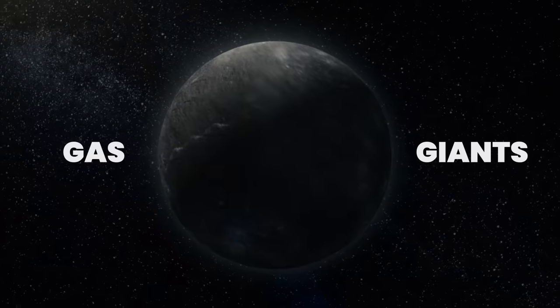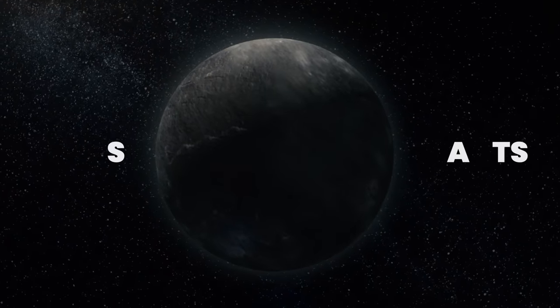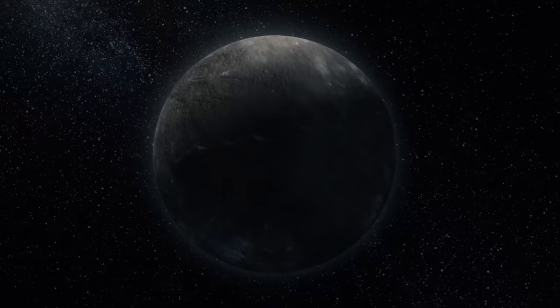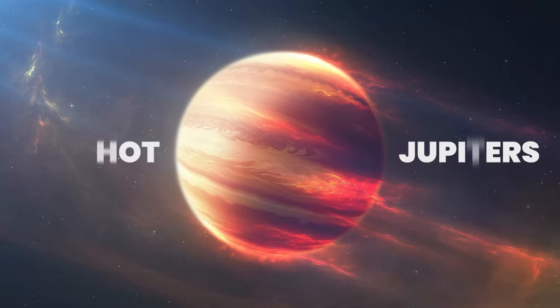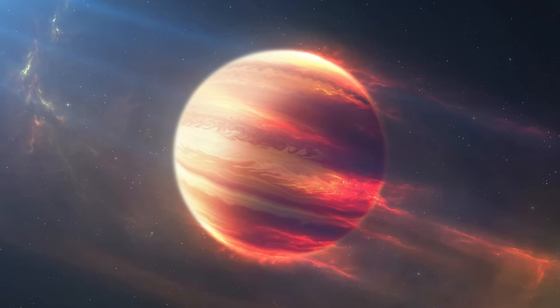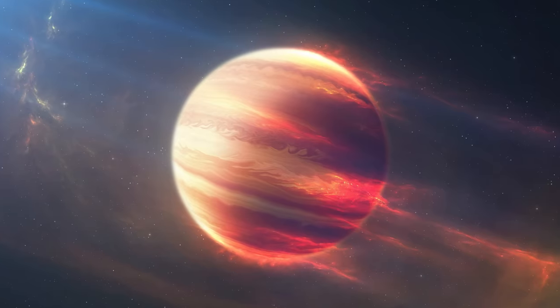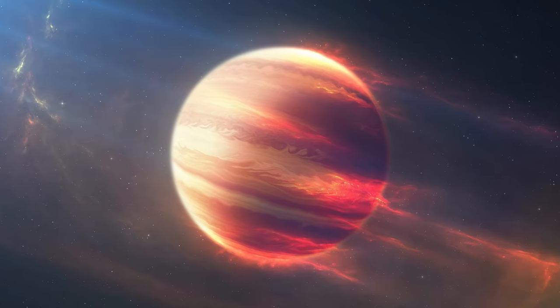Like the gas giants, planets composed mostly of gases such as hydrogen and helium with a relatively small rocky core. Also known as hot Jupiters, these planets orbit extremely close to their parent stars and are abundant in Kepler's data.